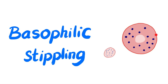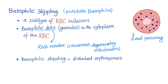Basophilic describes the stippling — it's a blue stippling of the red blood cell, not the basophil, which is one of the white blood cells. Basophilic stippling, also known as punctate basophilia — punctate because it's like dots — is one of the red blood cell inclusions. They are basophilic dots or granules in the red blood cell cytoplasm, basically RNA residue consisting of ribosomes, degrading mitochondria, and other material.